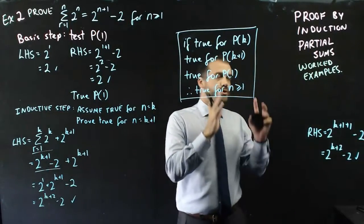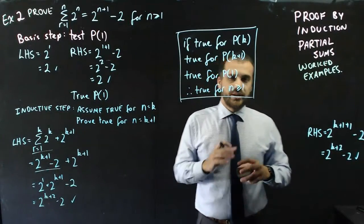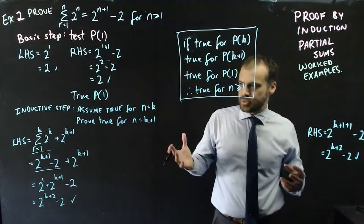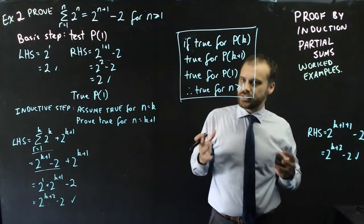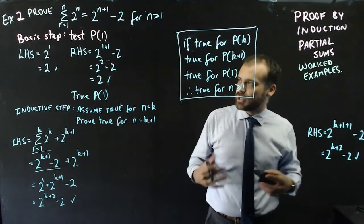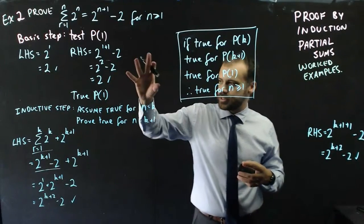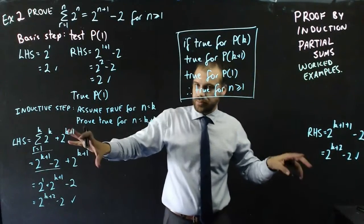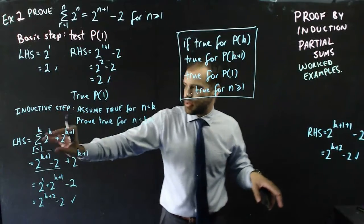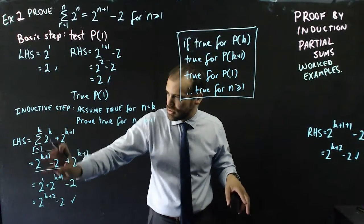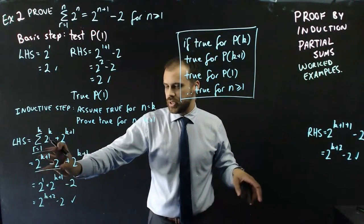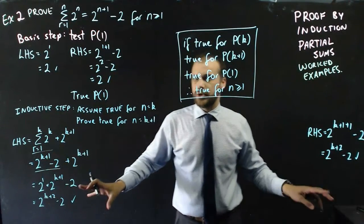Those were two proof by induction partial sums. You should see that it's fairly formulaic: do your basis step, set up your left-hand side and right-hand side, substitute what you assumed, and then start working.